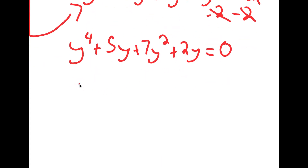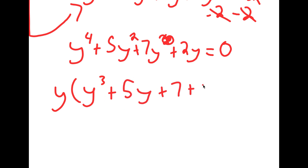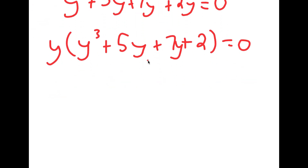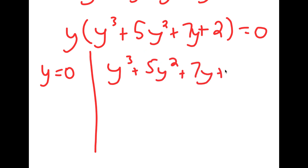From here, I factor out the greatest common factor from the left-hand side, which is y. So I get y times y to the power of 3, plus 5y squared, plus 7y, plus 2, is equal to 0.